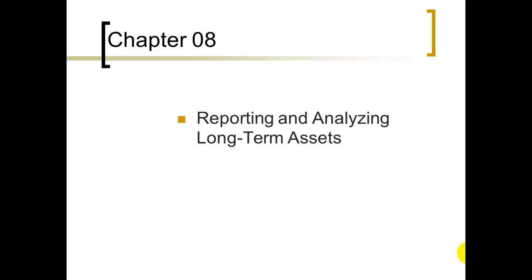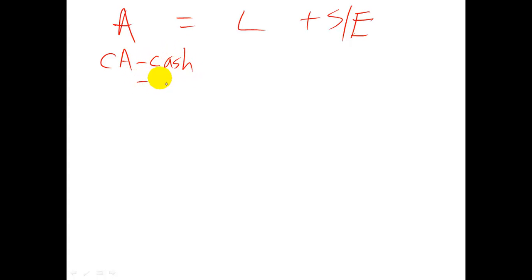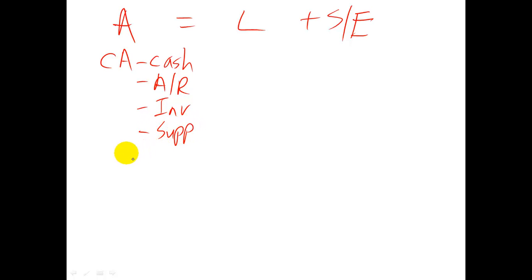Hello again, this is Roy with another video lecture for chapter number eight, where we cover long-term assets. Let's review our accounting equation: assets, things we own, are equal to liabilities, amounts we owe, plus stockholder or shareholders' equity. For the past few chapters we've been covering a special classification of assets called current assets — assets that can be converted into cash. Now here in chapter 8 we have other things we own but lasting longer than a year, called long-term assets.